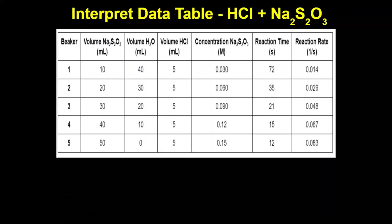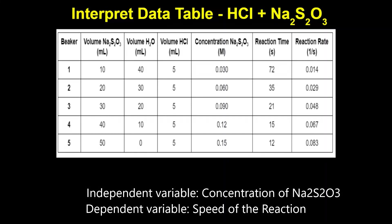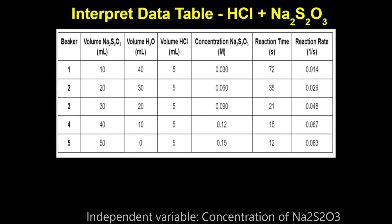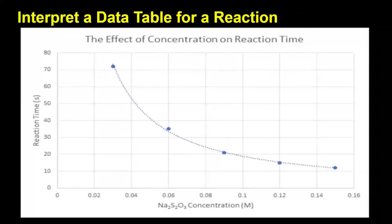Let's take a closer look at the data from this experiment. In the first column we see beakers one through five. These were the five trials for the experiment. Notice that the amount of Na2S2O3 increases in each trial while the amount of added water decreases. This was to have the same total volume of liquid in the five trials while giving different concentrations of sodium thiosulfate. The concentration of the Na2S2O3 ranged from 0.03 molar in the first trial to 0.15 molar in the fifth trial.